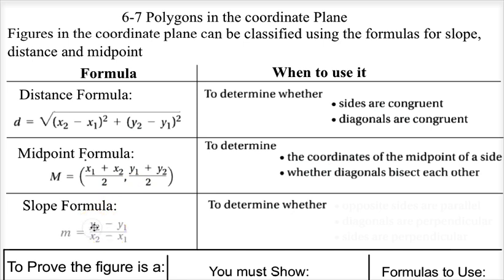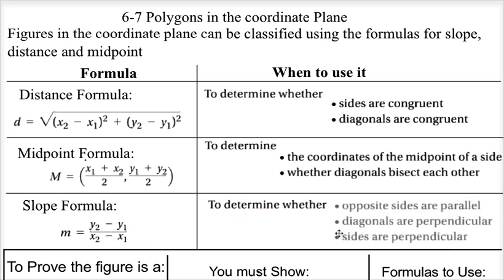The slope formula: remember m is slope, it's y2 minus y1 over x2 minus x1 — slope is the change in y over the change in x. We use slope to see if opposite sides are parallel; in a parallelogram, opposite sides are parallel. We can use it to show the diagonals are perpendicular, which is true in a rhombus or a square. Or we can use it to show sides are perpendicular, because a square and a rectangle each have four right angles.